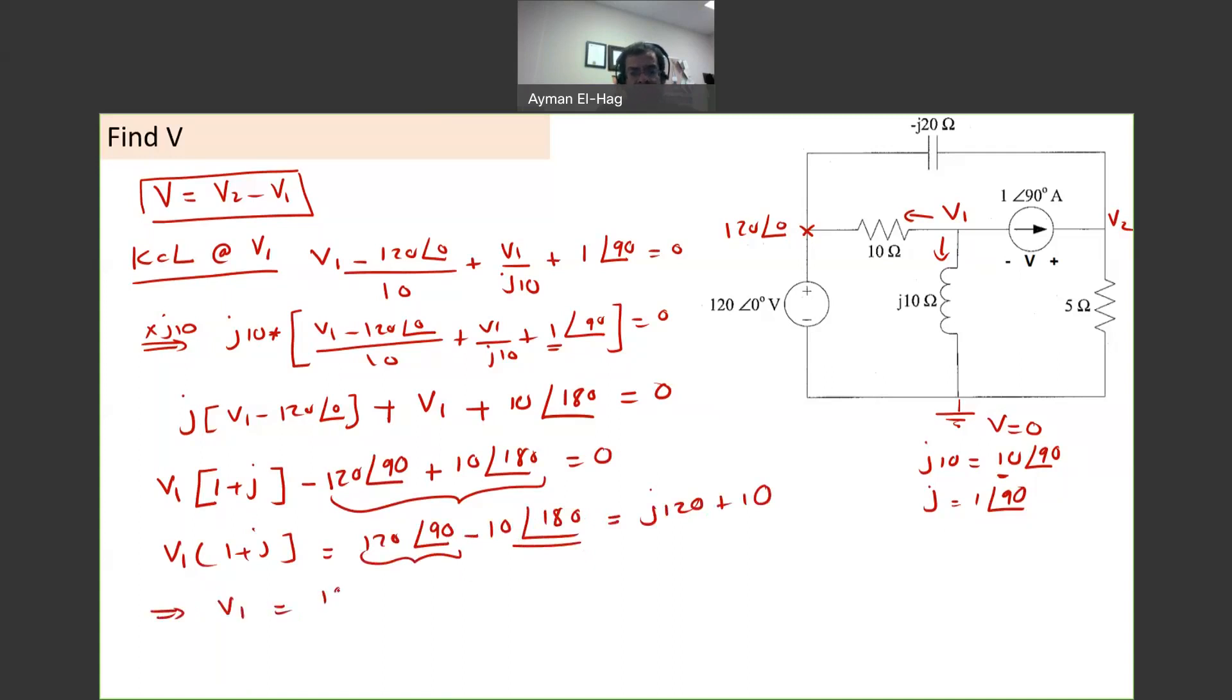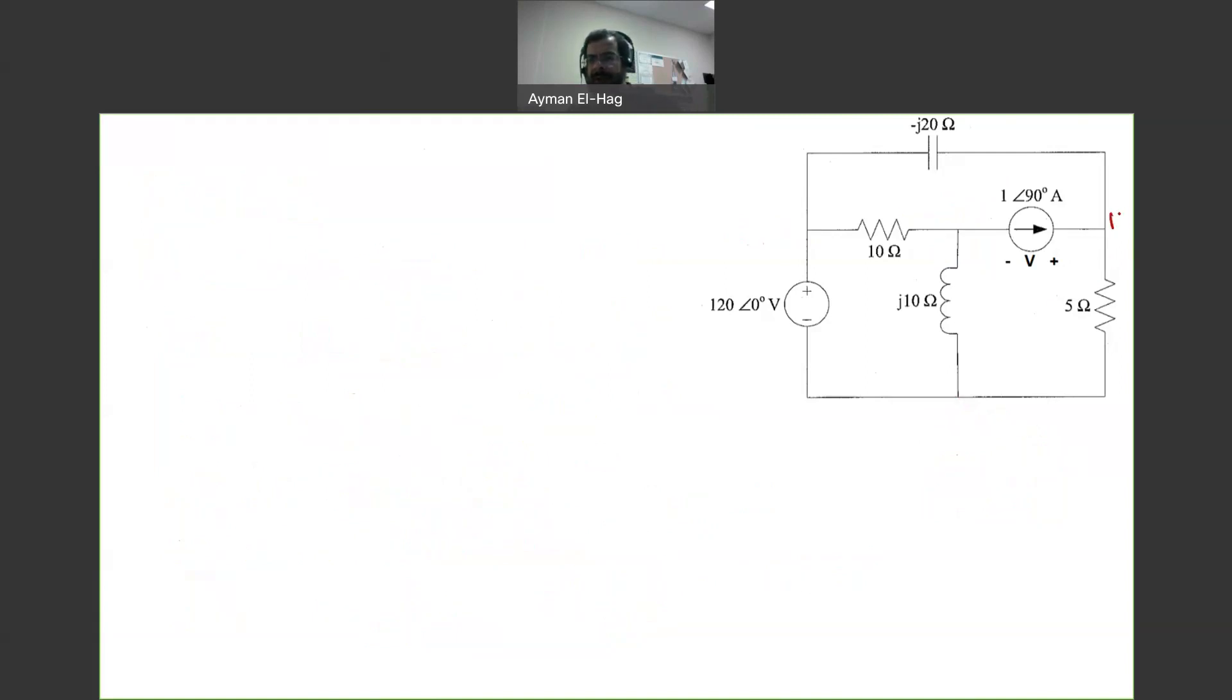So now I am dividing two rectangular numbers, so the best thing is to convert both of them into polar, so this will become equal to 120.4 angle of 85.24, divided by 1.41 angle of 45, which is equal to 85.4 angle of 40.24. So now, we found V1.